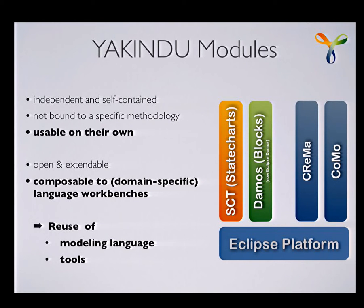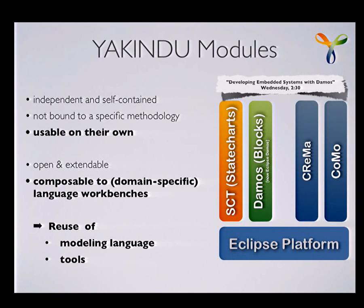Darmus is currently undergoing the IP review process for the source code, so you will still find the code in the Yakindu repository for now, but it will soon move to Eclipse as well. My colleague Andreas Unger, who is the project lead there, is going to talk about that tomorrow afternoon, so if you're interested in Darmus you may join there.